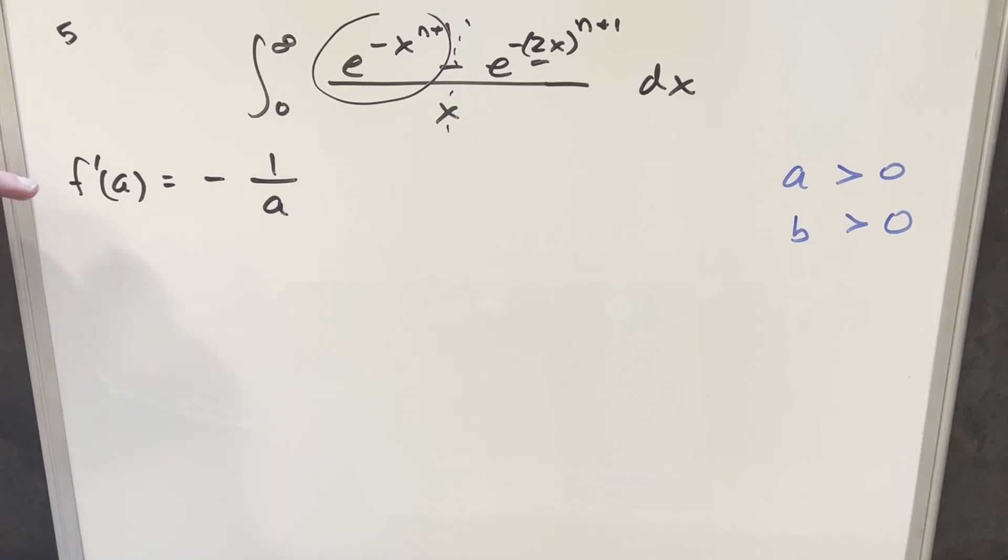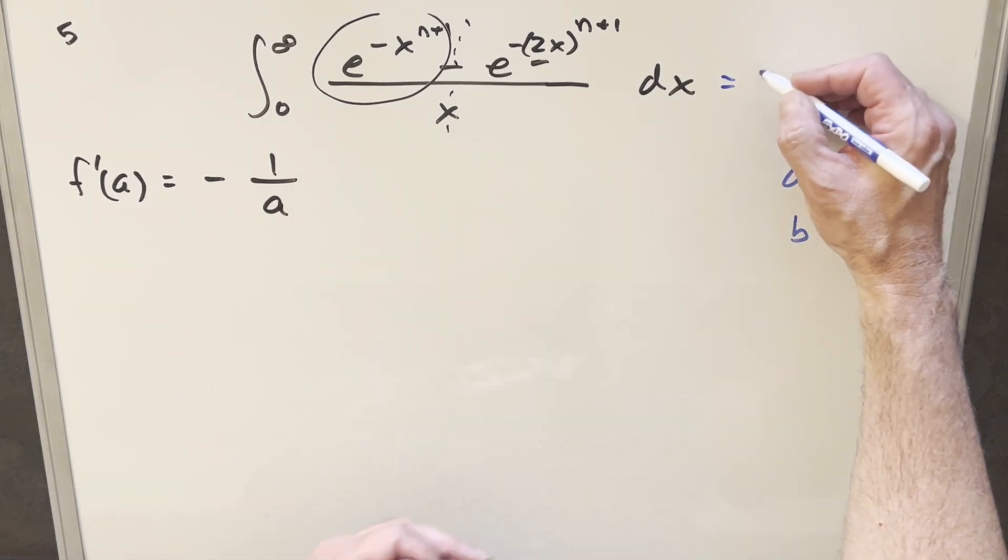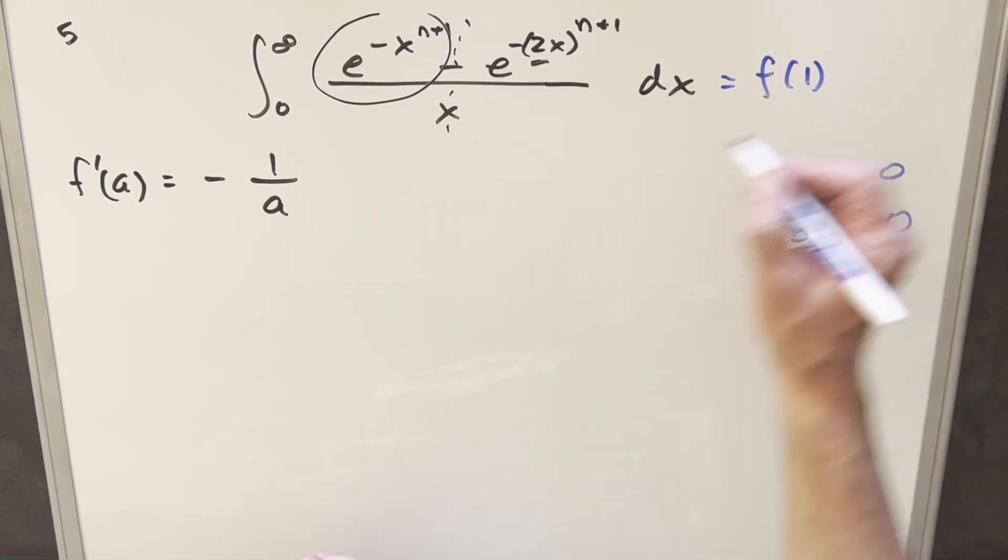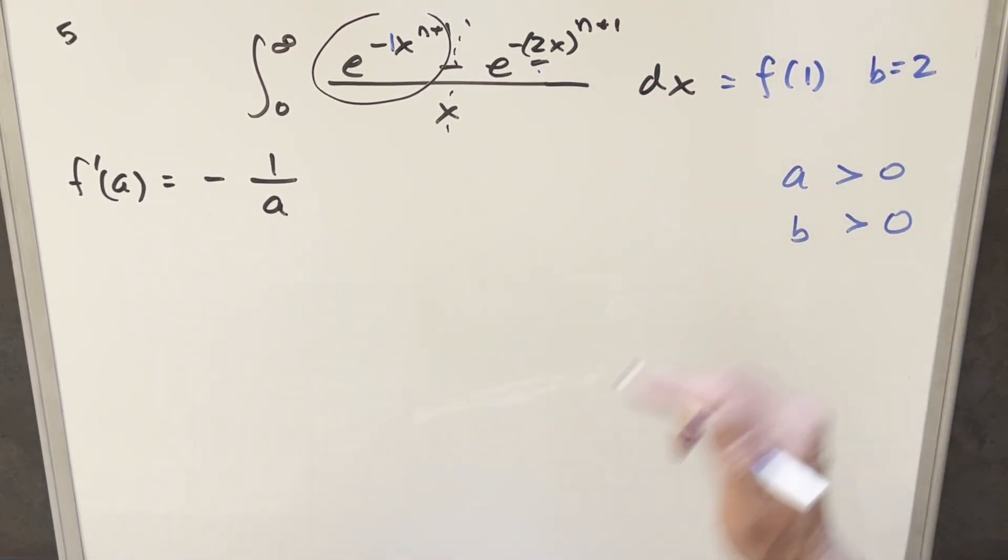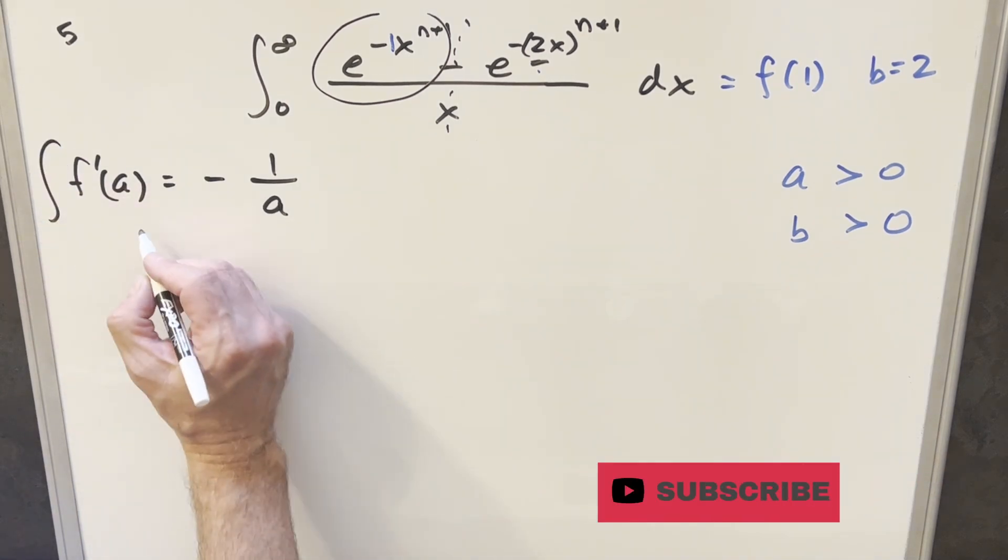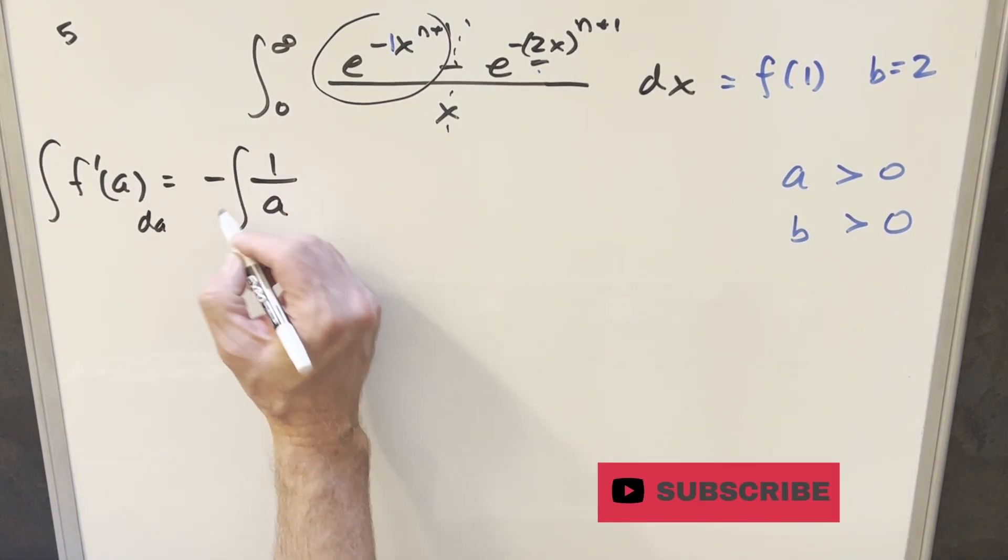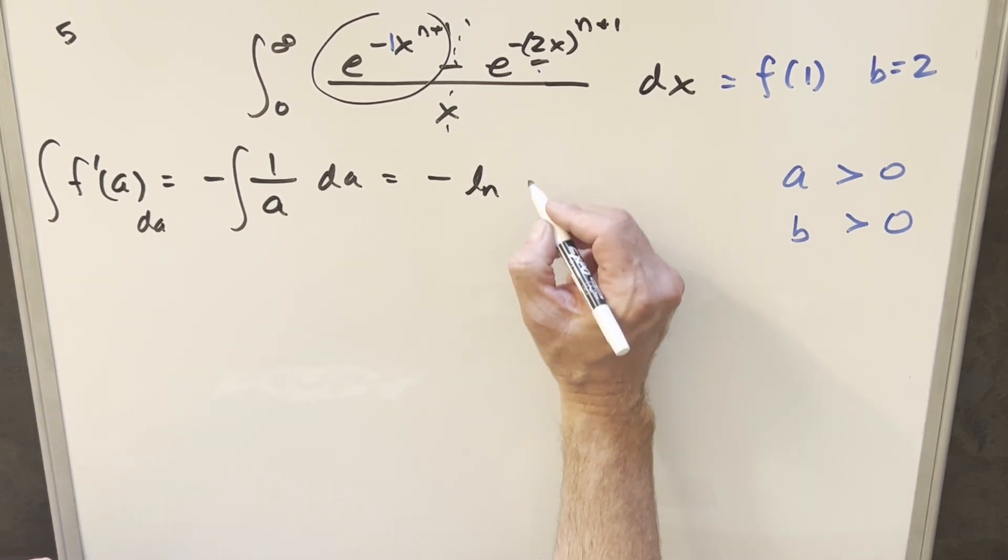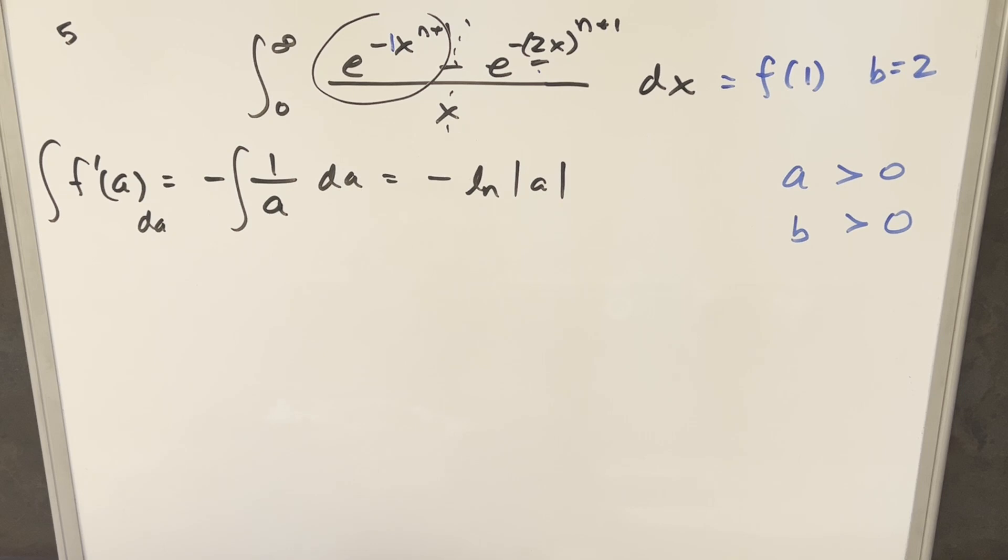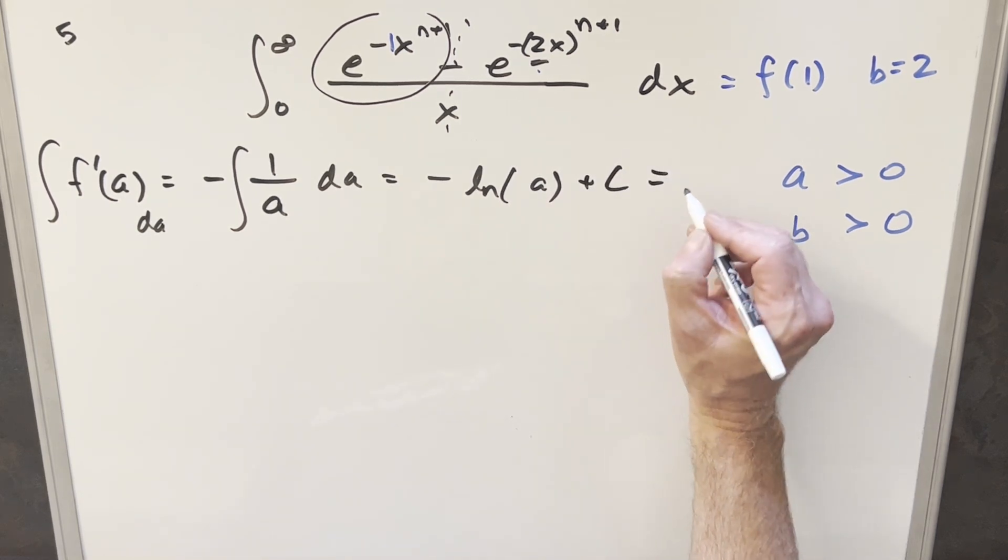And we just need to evaluate this from 0 to infinity. Plugging in infinity, this part's going to 0. Plug in 0, we have e to the 0 is just 1. So this is going to become minus 1 over a. And so for our f prime a value, we're going to have just minus 1 over a. But now at this point, we're going to want to get this back to f of a in order to get our goal, which is this thing right here. Just remembering that this thing here is the same thing as f of 1, because we've got a 1 coefficient on the x right there. And this is going to be true when our b value is 2. So we'll say b equals 2 for our goal.